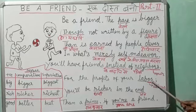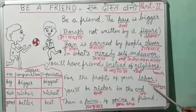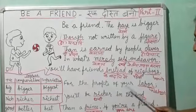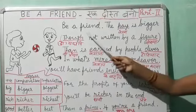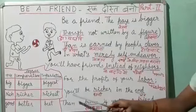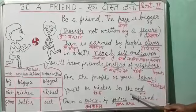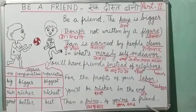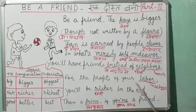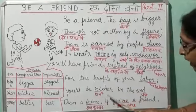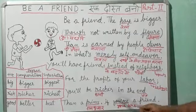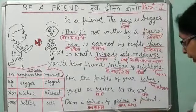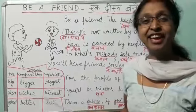Hum log jo British English padhte hain usme B-O-U-R hota hai neighbor ka spelling. American English mein labor hai L-A-B-O-R aur hum log British English mein L-A-B-O-U-R. For the profits of your labor — aap jo parishram karenge dost banne ke liye uska jo profit hai. You will be richer in the end than a prince if you are a friend.